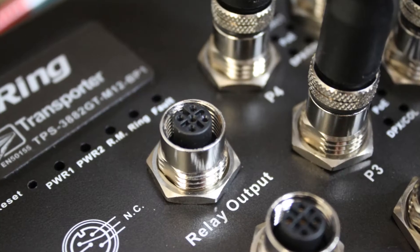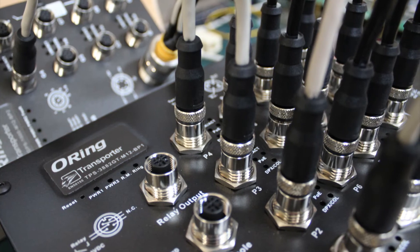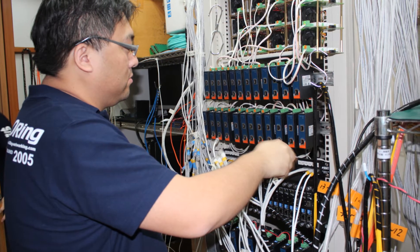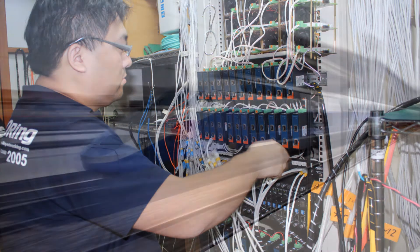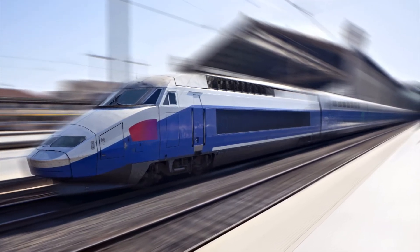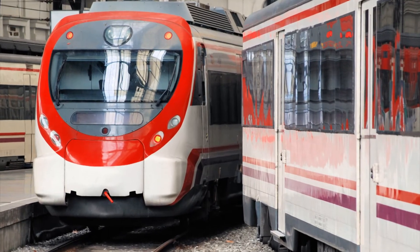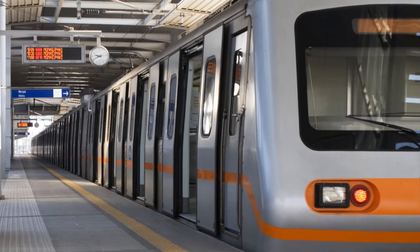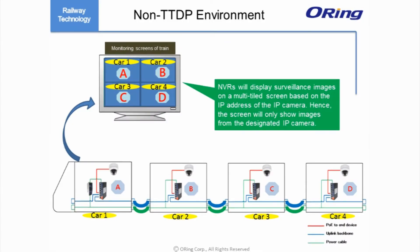Generally, networks are designed to work in a fixed environment and thus lack flexibility. Changing network topologies will require the entire network to be reconfigured. In railway applications where train carriages are constantly changed or rearranged, this is a pain in the neck because IT staff must spend a lot of time adjusting network configurations manually.